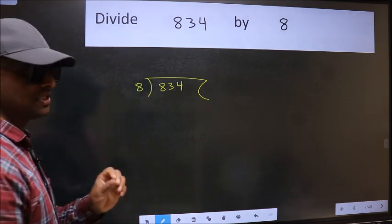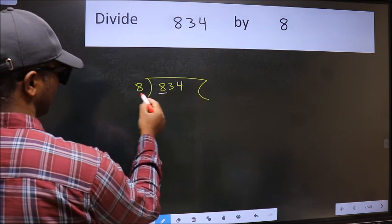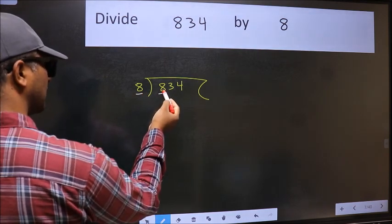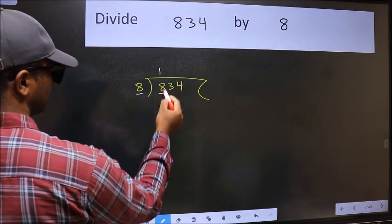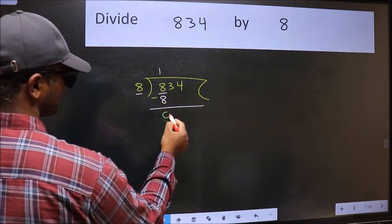This is your step 1. Next. Here we have 8 and here 8. When do we get 8 in 8 table? 8 ones 8. Now we should subtract. We get 0.